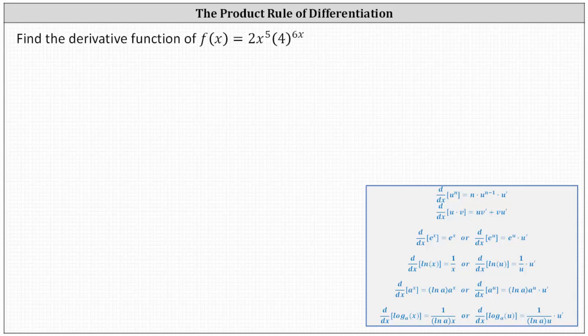Because our function is a product of two functions of x, we need to apply the product rule of differentiation. Looking at our notes below, it is given as the derivative of u times v with respect to x equals u times v prime plus v times u prime, indicating the derivative equals the first function times the derivative of the second function plus the second function times the derivative of the first function.